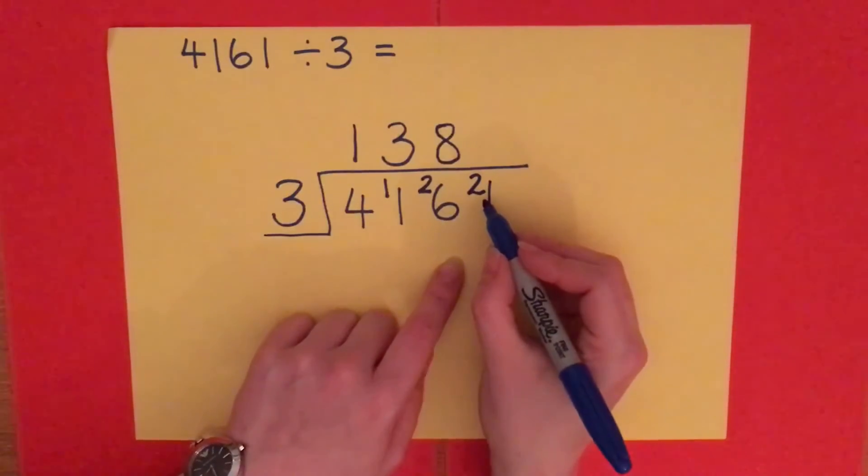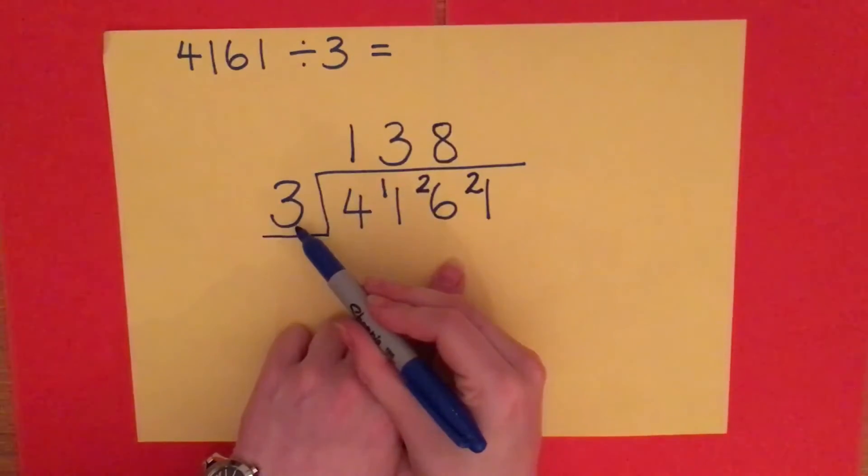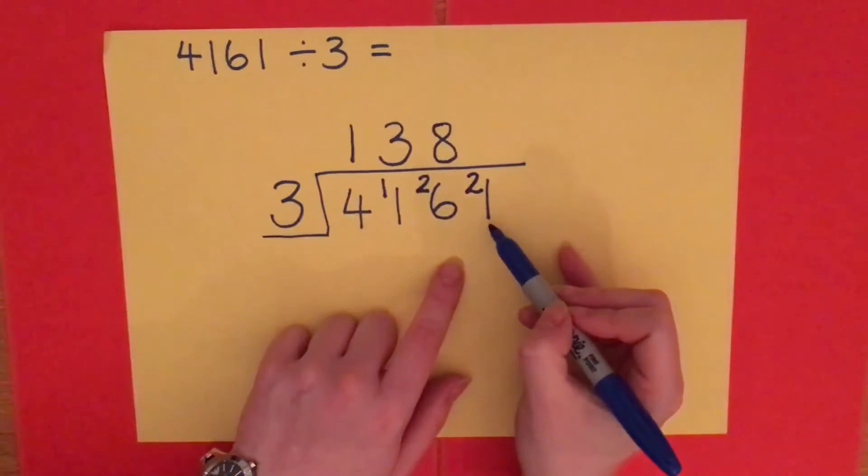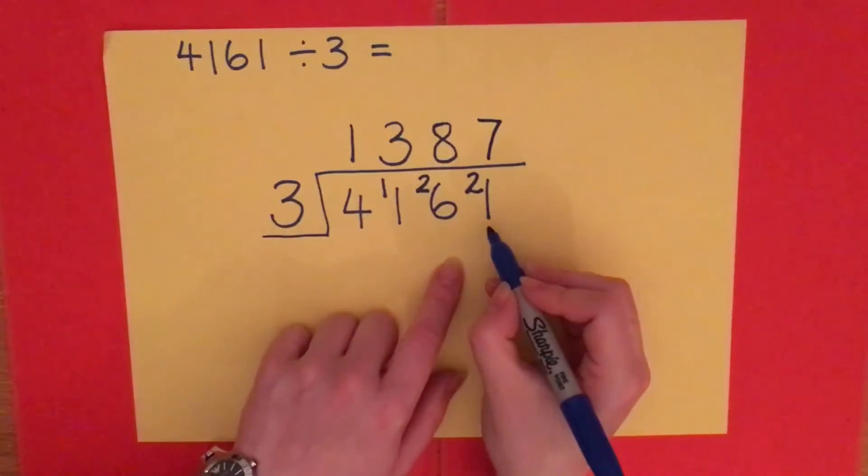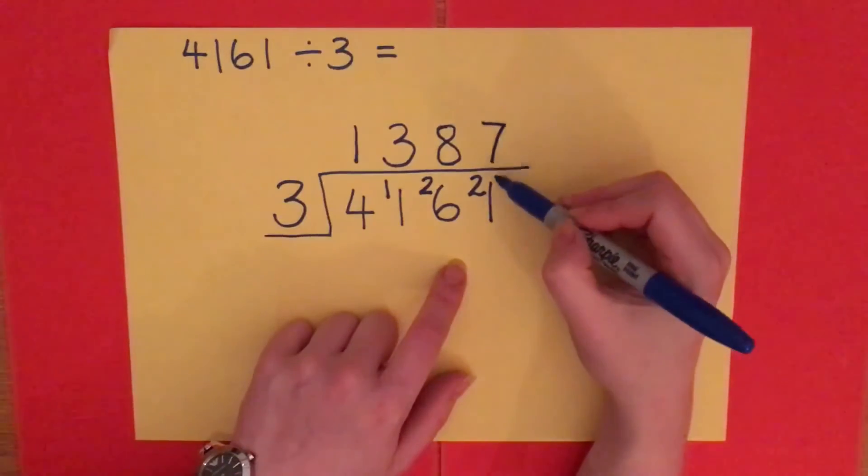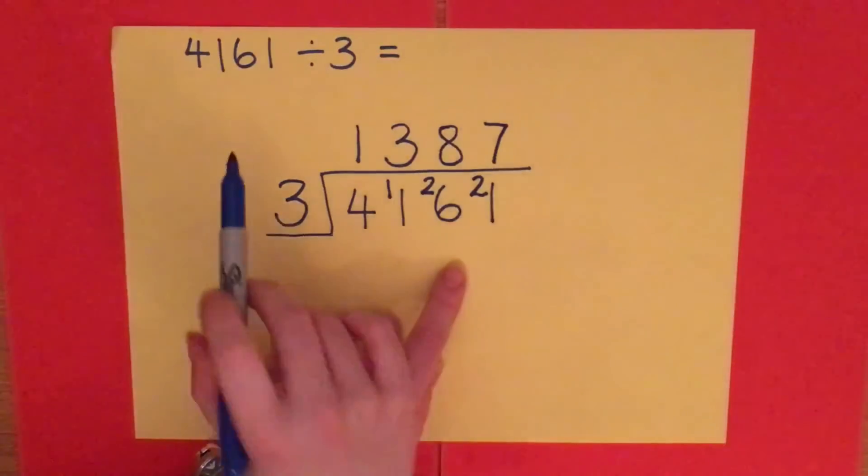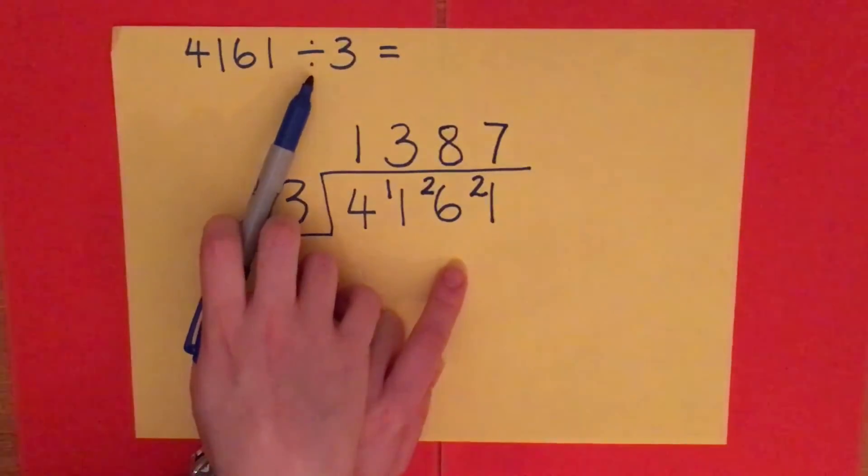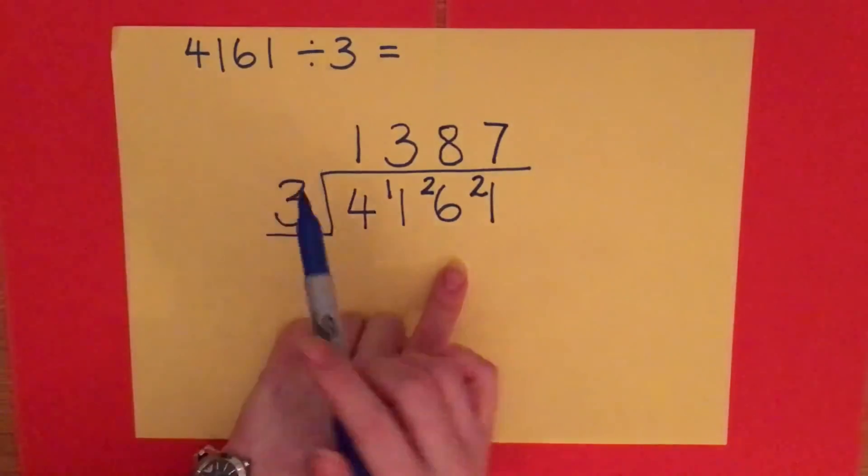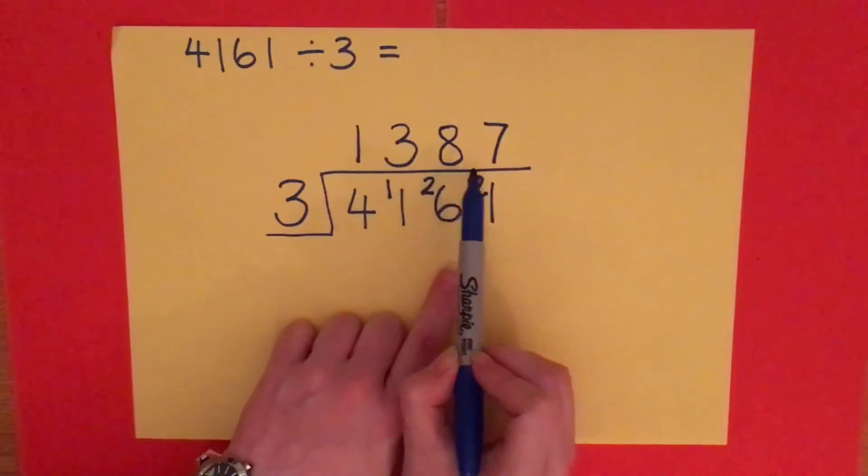So I now have 21. How many threes make 21? Well, 3 times 7 is 21. I write my answer above the digit that I'm dividing at that moment. So the question was 4,161 divided by 3, and I've got the answer 1,387.